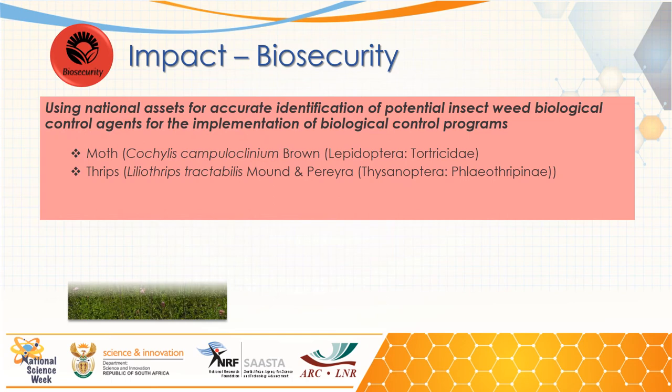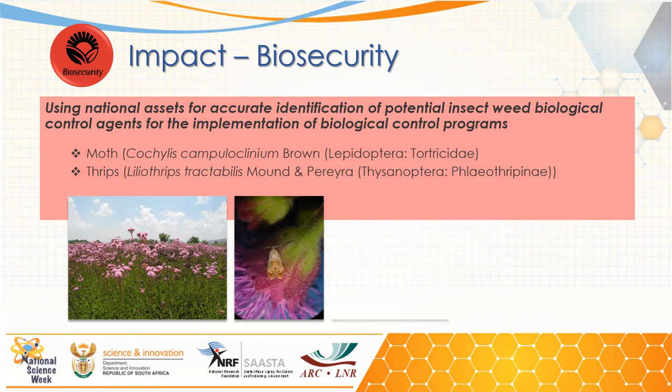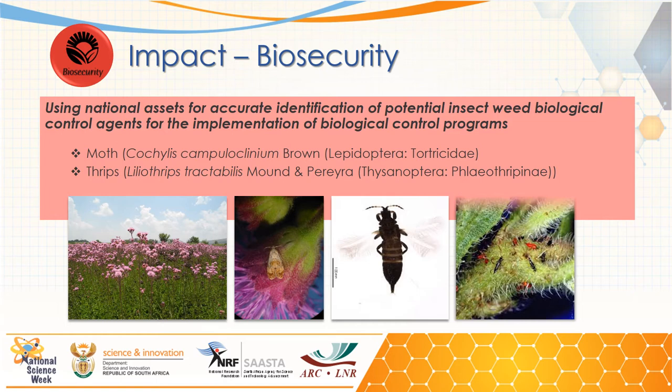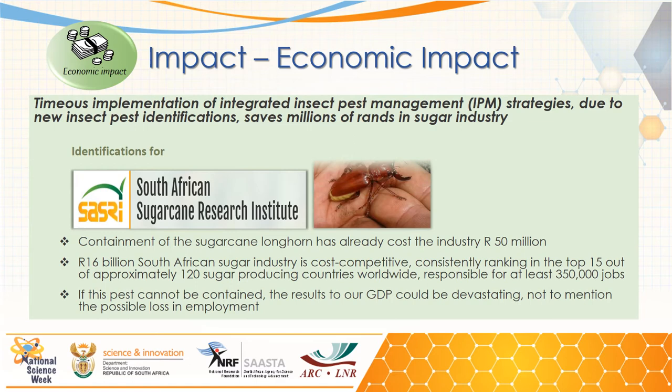The national assets are used to provide accurate identification of insects that can be used as possible biological control agents of invasive weeds. This is important for the biological control agent programs run by the Department of Environment, Forestry and Fisheries. The pink flowers of the pompom plant are seen throughout the country, and it is controlled by a small moth. This moth is able to reduce pompom plant populations and helps in controlling its spread.